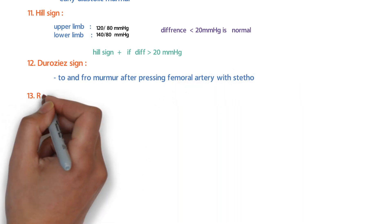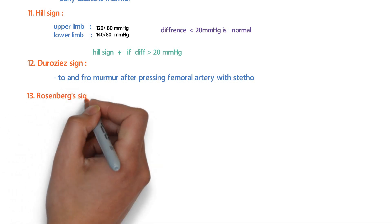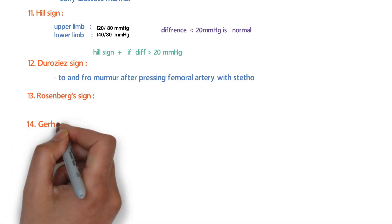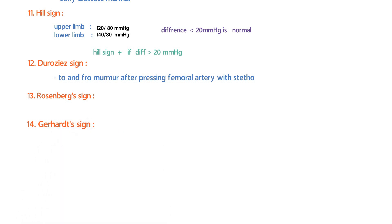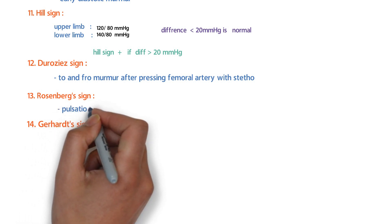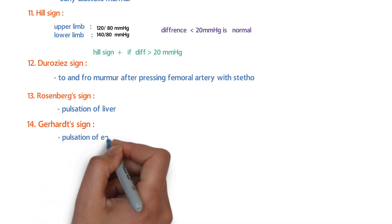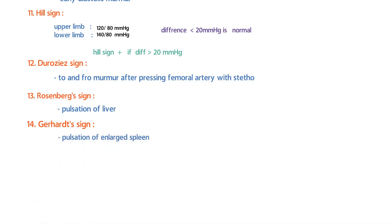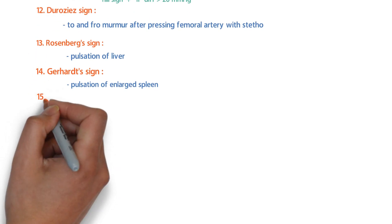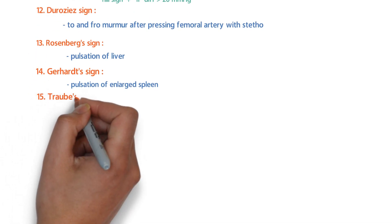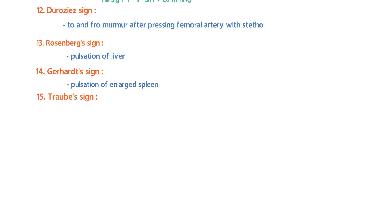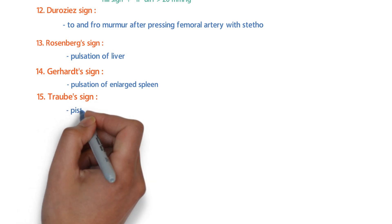Rosenberg's sign refers to pulsations of the liver, while Gerhardt's sign refers to pulsations of the enlarged spleen. Both hepatic and splenic pulsations can be observed in severe aortic regurgitation.